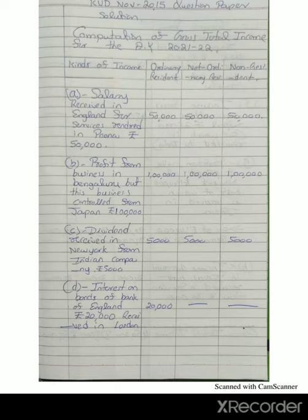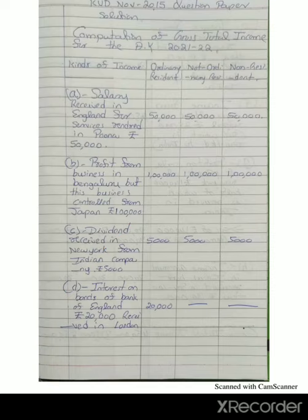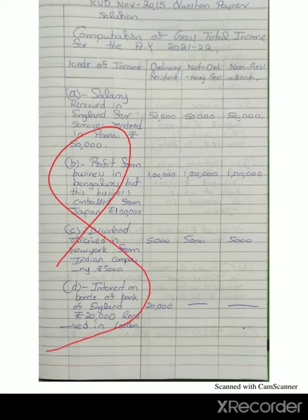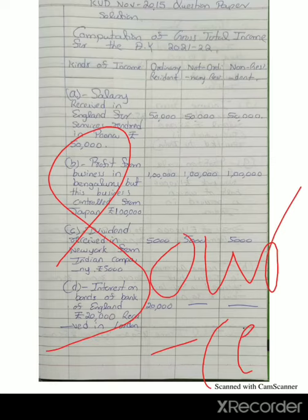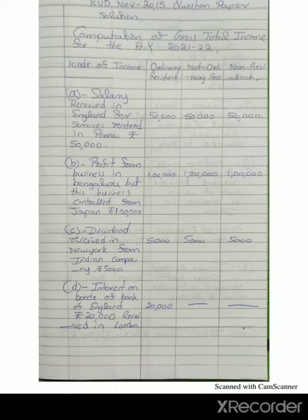Next type of income: dividend received in New York from an Indian company, Rs. 5,000. The company is an Indian company, so the source is India. Therefore it is Indian income and it is taxable to all.